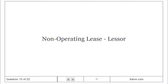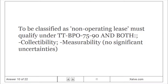Non-operating lease — lessor: to be classified as a non-operating lease, must qualify under T.T.B.P.O. or 75%/90% criteria, and both collectibility and measurability conditions must be met.